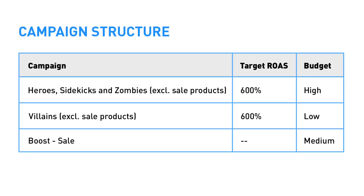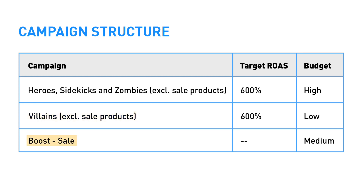Campaign 1: Heroes, Sidekicks, and Zombies. The sale products — the boost products — are excluded from this campaign. Campaign 2: Villains. Also make sure that the boost products are excluded from the Villains campaign, so that the boost products are not included in the labelizer strategy anymore. Campaign 3: Boost — the sale products.